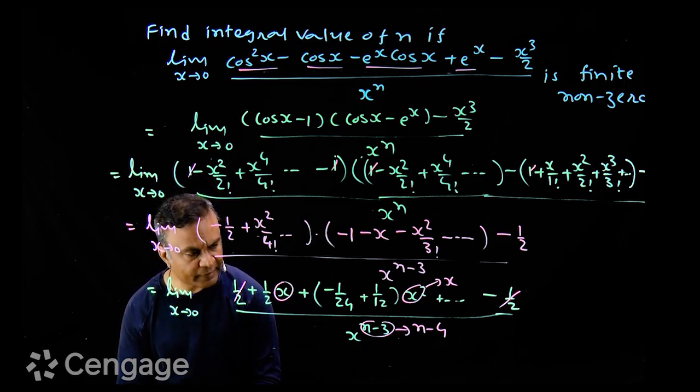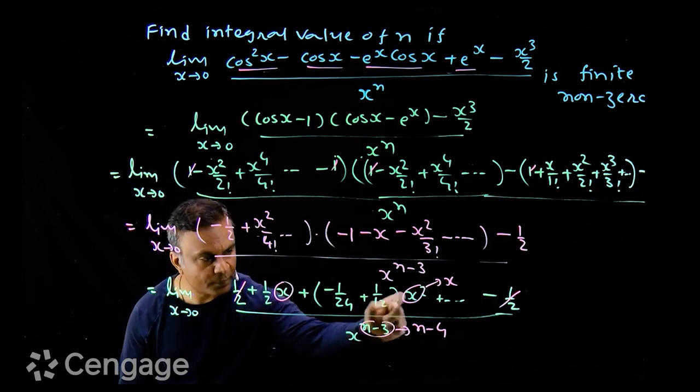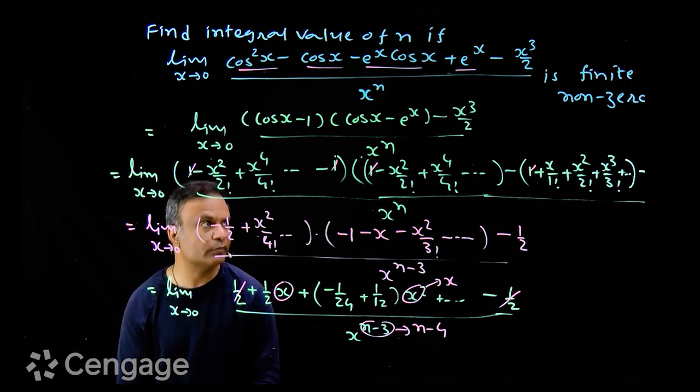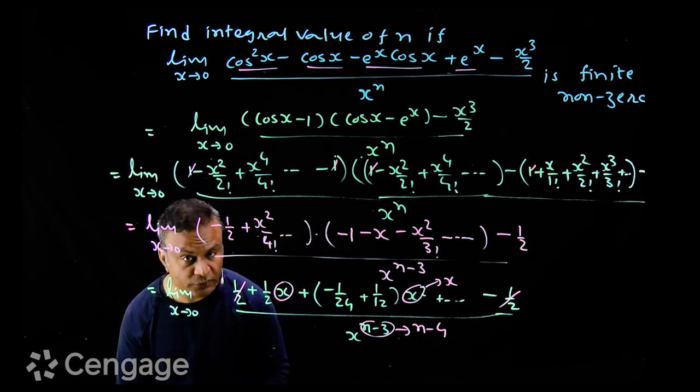And if n minus 4 is less than zero, then tends to zero power negative, kya ho jayega? Infinity. And half upon infinity tends to zero. But we want limit to be non-zero.